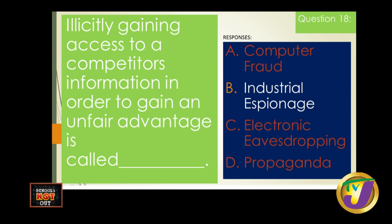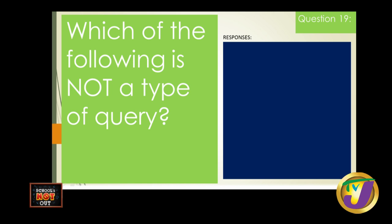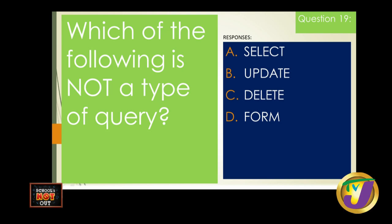Question nineteen: which of the following is NOT a type of query? The options are A) select, B) update, C) delete, D) form. Select, update, and delete are the most common types of queries. A form is a completely different database object and is not a type of query whatsoever. The answer is D: form.